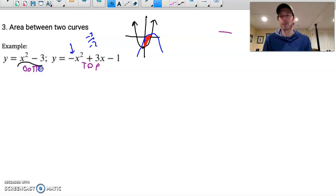So if I'm going to take the integral, and my goal is always to go top minus bottom, this integral would look like negative x squared plus 3x minus 1 minus. And I'm going to put in the bottom function, which is in parentheses, because I have to subtract the whole function. And so I have to subtract x squared and minus 3. So what's going to happen is it's going to become, obviously, a plus 3 and a minus x squared there.